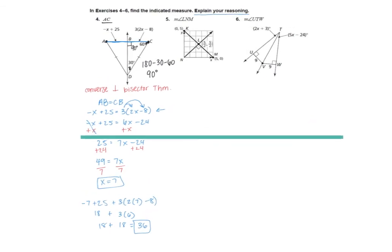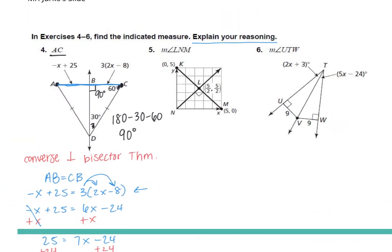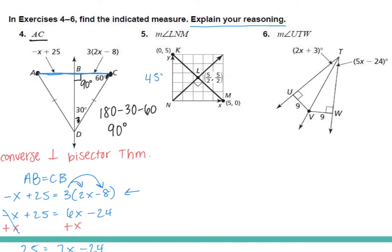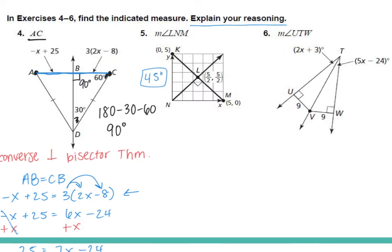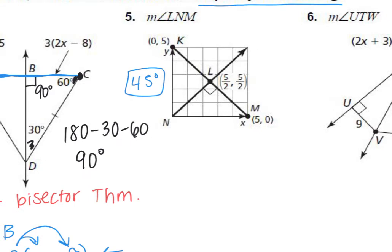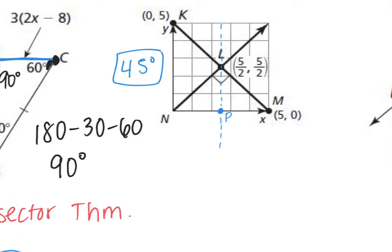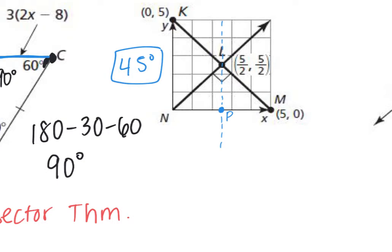Number five was really tricky. Did anyone get 45 degrees? The main thing here is I wanted you to draw a line down the middle and label this point P. Remember, N is at (0, 0) and M is at (5, 0). What are the coordinates of point P? That's 2.5, or 5/2, comma 0.